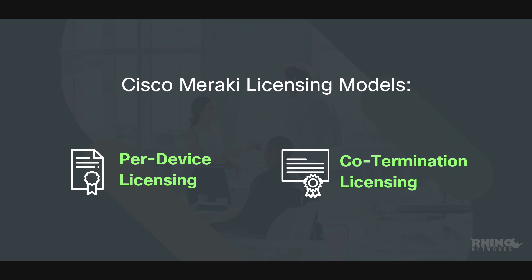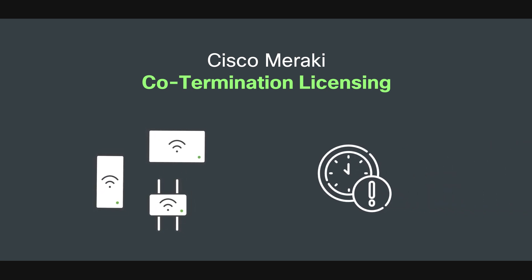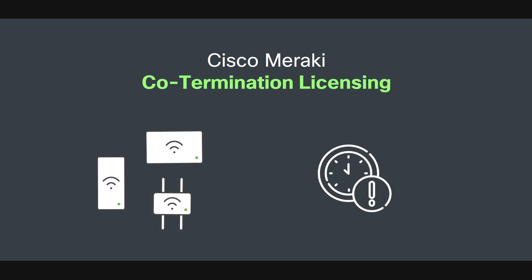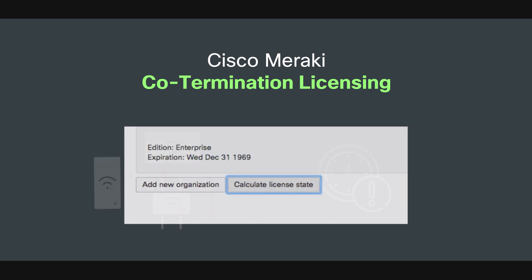In this video we will be comparing the benefits of both options to give you a better understanding of what each has to offer. The Cisco Meraki cotermination licensing model is best for organizations which prefer a simpler approach with a single expiration date for all of the Meraki devices, regardless of when they were purchased. It uses a weighted average to calculate this date, which is recalculated whenever you claim additional licenses.